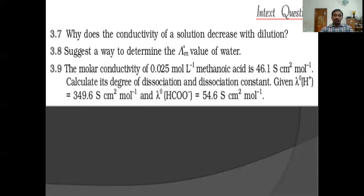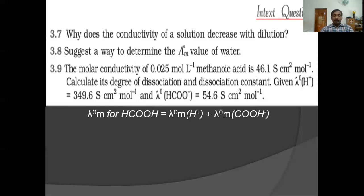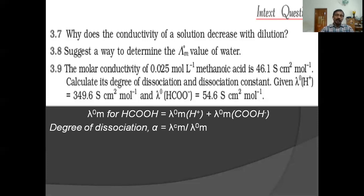The molar conductivity of 0.025 mol/L methanoic acid is 46.1 S·cm²·mol⁻¹. Calculate its degree of dissociation and dissociation constant. Given: λ⁰(H⁺) = 349.6 S·cm²·mol⁻¹ and λ⁰(HCOO⁻) = 54.6 S·cm²·mol⁻¹. Methanoic acid is HCOOH, so λ⁰M(HCOOH) = λ⁰M(H⁺) + λ⁰M(HCOO⁻) = 349.6 + 54.6.